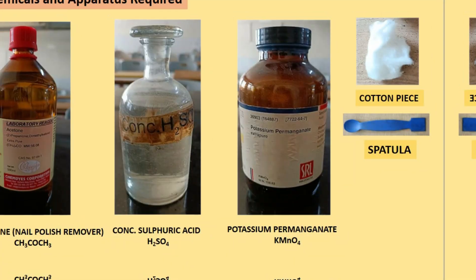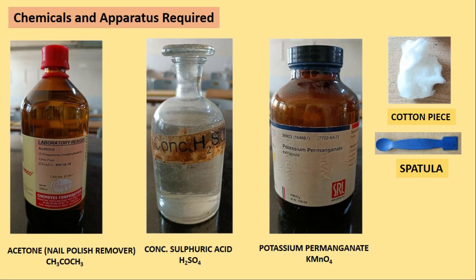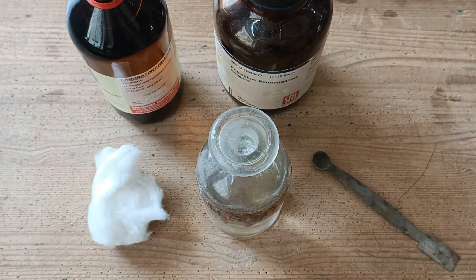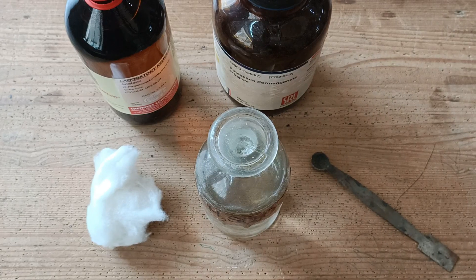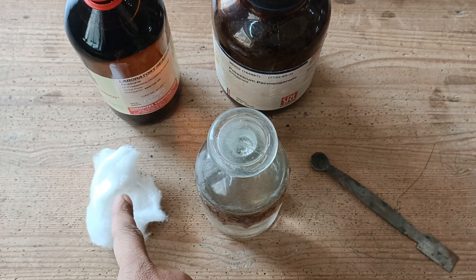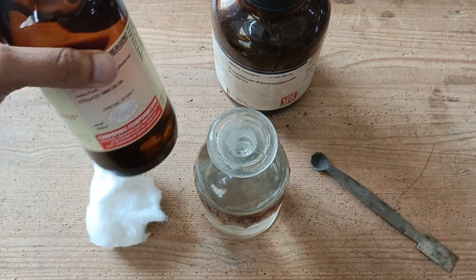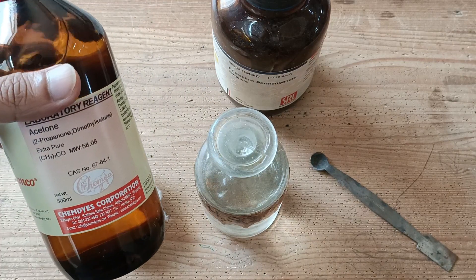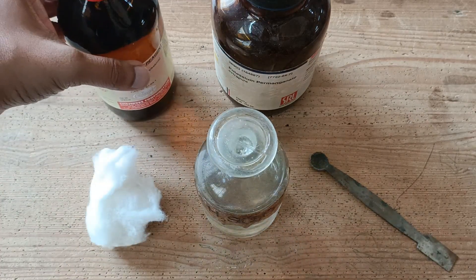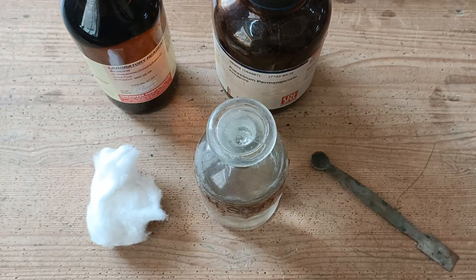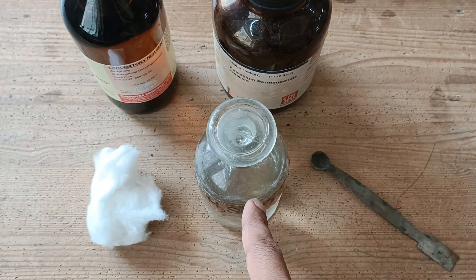Hello all. In this video, we will be understanding an application of redox reactions. This is a fun activity in chemistry for 9 to 12 graders: fire without a matchstick. We will require acetone, commonly known as nail polish remover, and concentrated sulfuric acid.